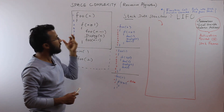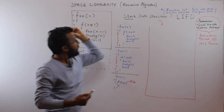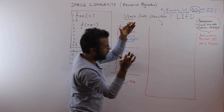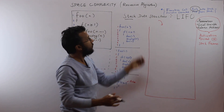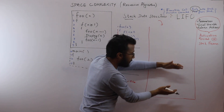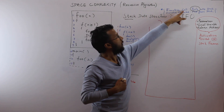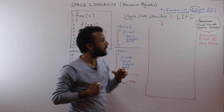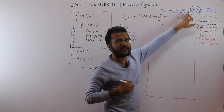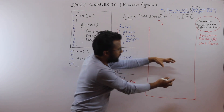In a recursive function, whenever a function call is made — whether recursive or not — you need to push something into the stack, performing a push operation. Whenever that function instance is executed completely, it should be popped out from the stack. So: function call → push; execution complete → pop.